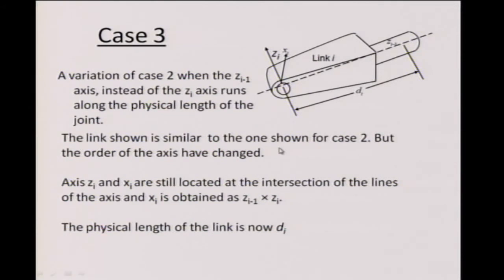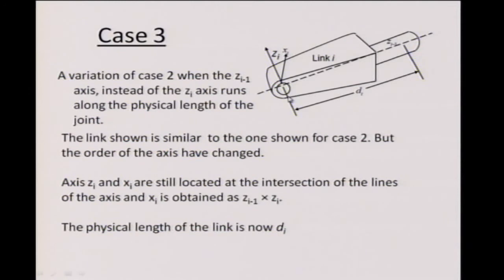Now let us look at the same link which is reversed: this axis is the (i−1)th axis and this one is the ith axis. Wherever you had the origin of the (i−1)th axis, from there to this line, this length now becomes d_i. So in some sense, the physical size of the link — at least a physical measure of the link — is now captured by the DH parameter. You still need to locate the z axis and locate x_i as the cross product.